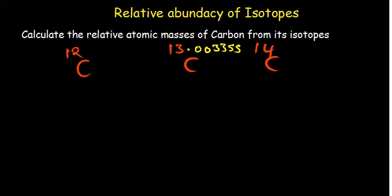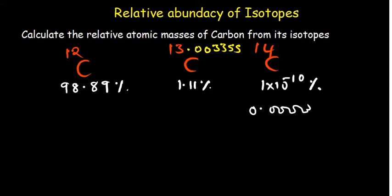These have percentages of existence, or what we're calling the relative abundance by percentage. Carbon-12 is 98.89%, carbon-13 is 1.11%, and carbon-14 is 1×10⁻¹⁰ percent, which is a very small value with 10 zeros—negligible.